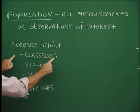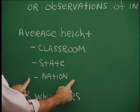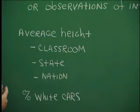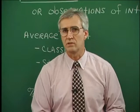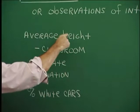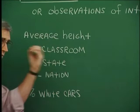I can think in terms of a small population of heights within a classroom, a much broader population of heights within a state, and an even broader population of heights within a nation. A quantitative kind of population would be height measurements, while a qualitative kind of population would be the percent of white cars — just made by observation if we're going to make that kind of calculation.